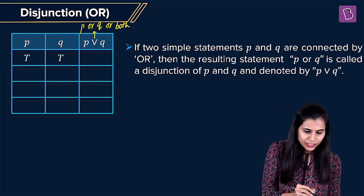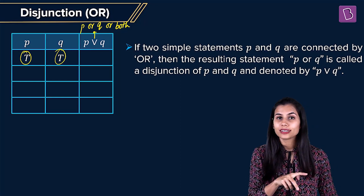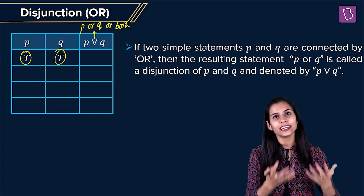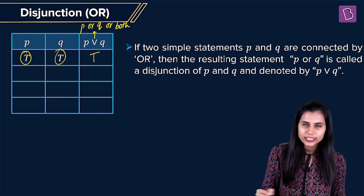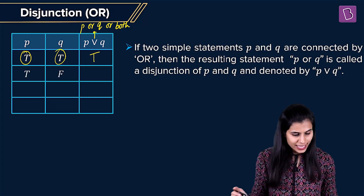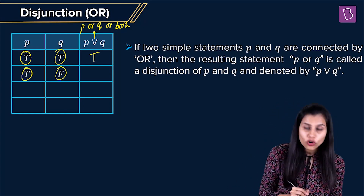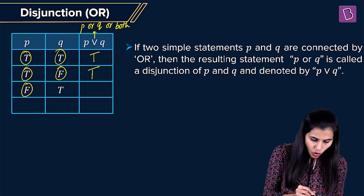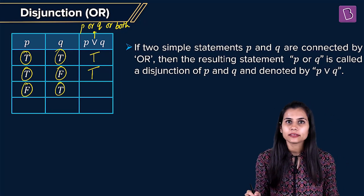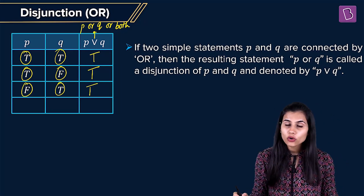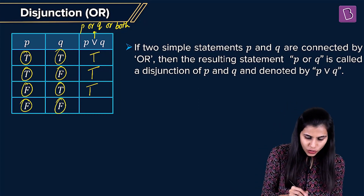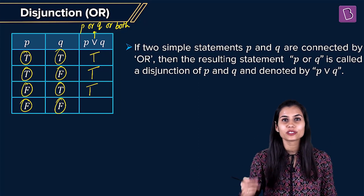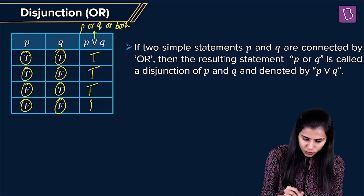When P is true and Q is true, both are true — that is allowed in inclusive OR. It's like it's a Sunday and a holiday, so P ∨ Q is definitely true; school remains closed. If it is a Sunday but not a holiday, even then school remains closed — P ∨ Q holds true. If it is not a Sunday but it is a holiday, school remains closed — true. If it is neither a Sunday nor a holiday, meaning P is false and Q is also false, then school will open — P ∨ Q is false.